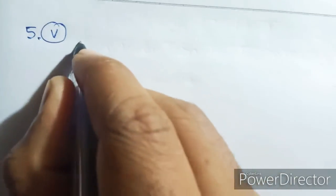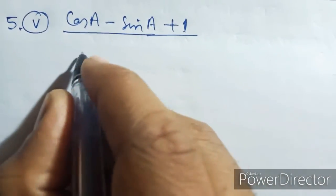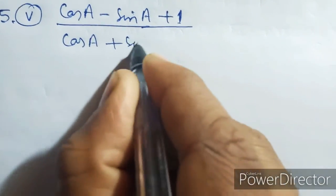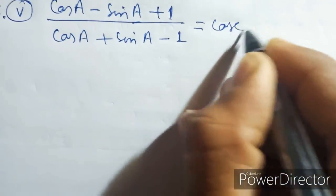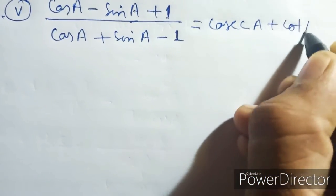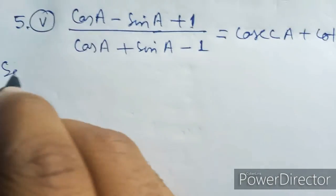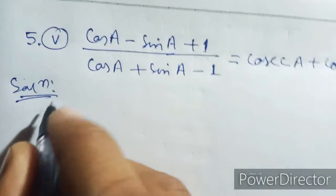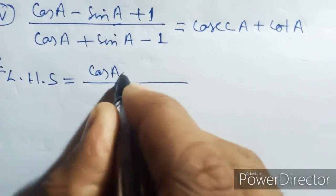Next, number 12: cos a minus cos a plus sin e plus 1 by cos a plus sin e minus 1 equal cos a. Left hand side equal cos a — solution: left hand side equal cos a plus the solution.